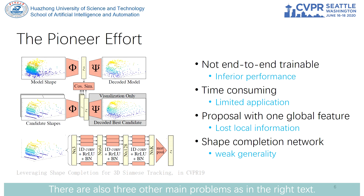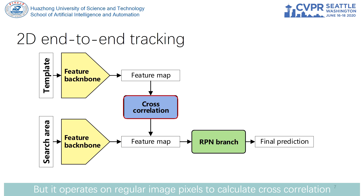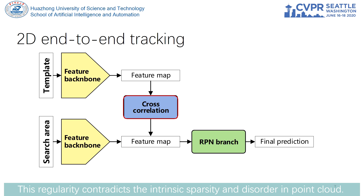On second thought, we can refer to 2D Siamese tracking, but it operates on regular image pixels to calculate cross-correlation between the template and search area. This regularity contradicts the inherent sparsity and disorder in point clouds.